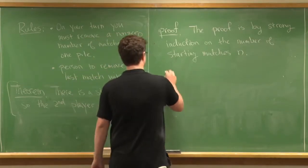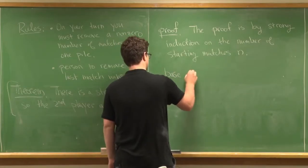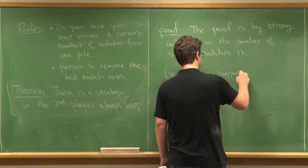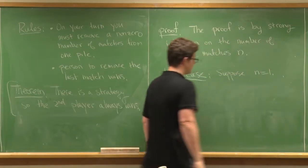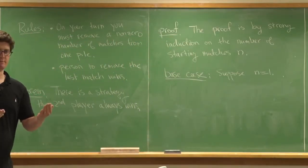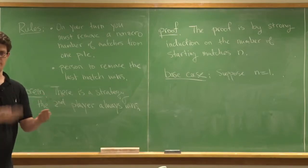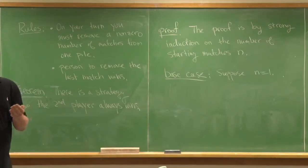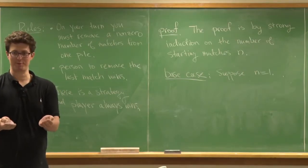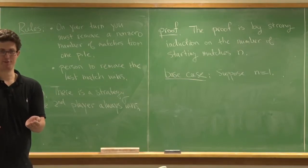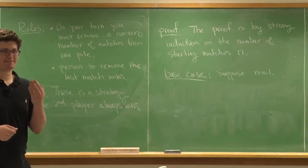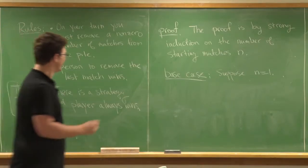Let's do the base case. Suppose n is equal to 1. In this situation we're playing the stupidest game in the world — one match and one match. Player one has to remove a match. Then I pick up the other match and I win. So for n equal to 1, the first player is forced to remove all the matches from one pile.